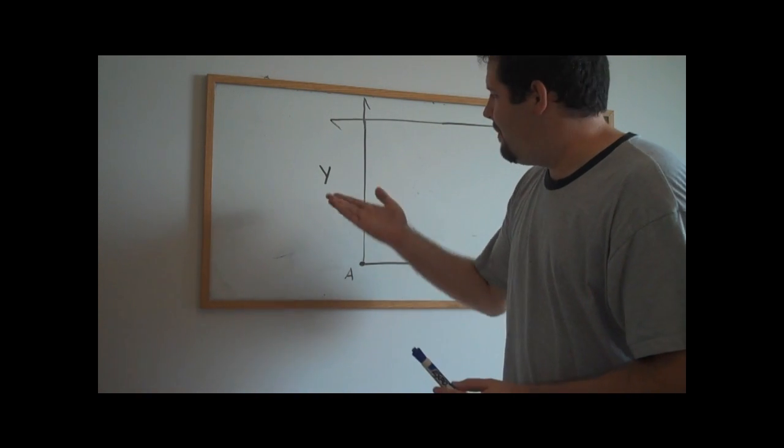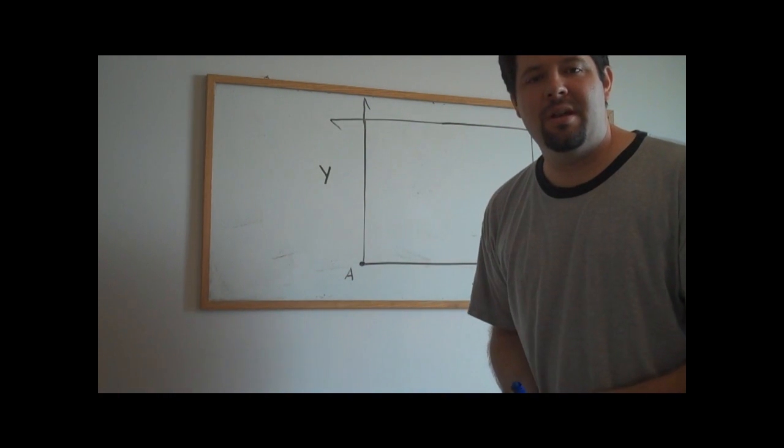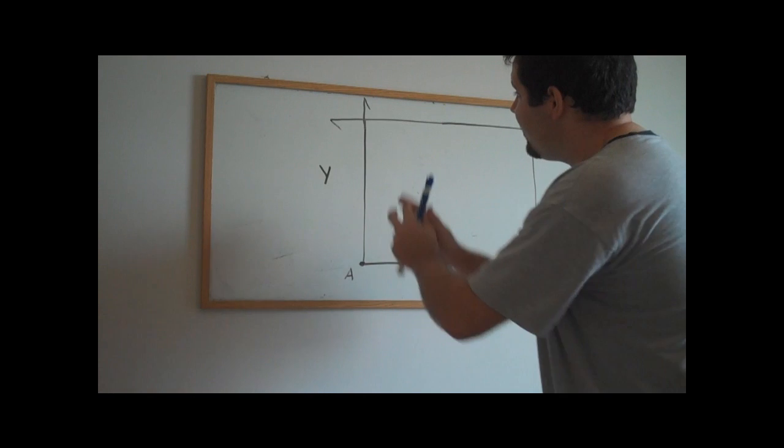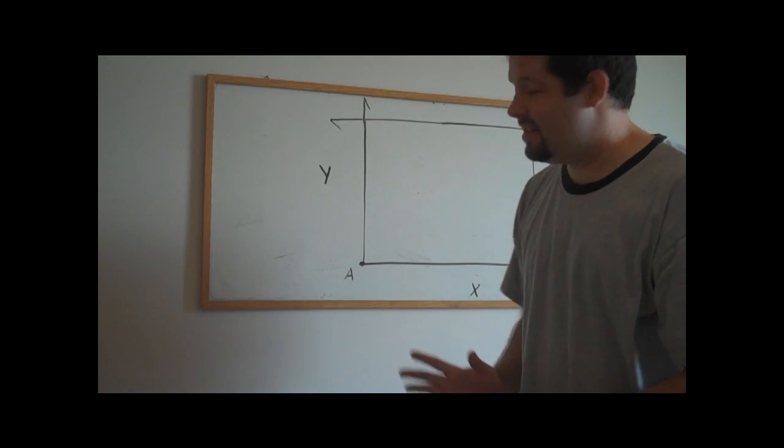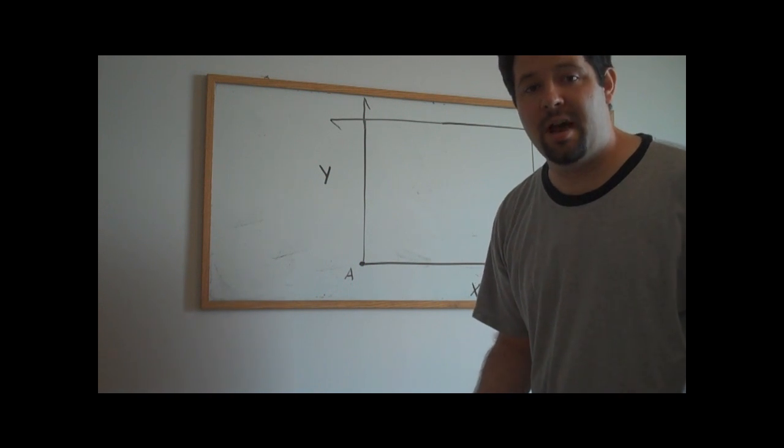We can do the same thing for the total endowment of y, and thinking about dividing up that total endowment in different ways. That's why we look at it in terms of a box. It just tells us different ways to divide up the total endowment.